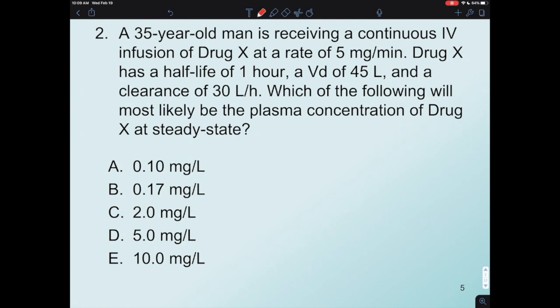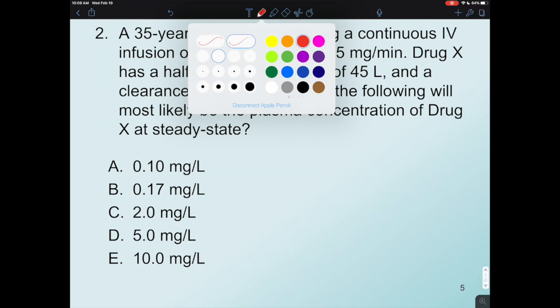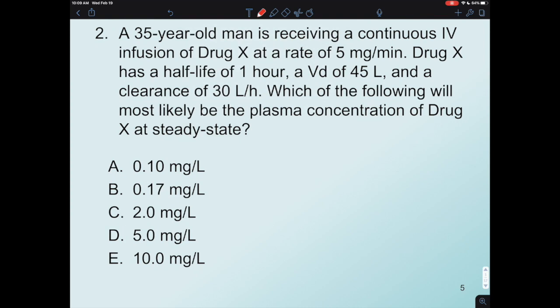Okay, so we're going to solve this question assuming you don't know the equation, and many questions like this. The way we're going to solve it is first we're going to look at the units that are given in the answers, so these are the units. We're going to use something called dimension analysis. I want to build milligrams per liter from the information I'm given.